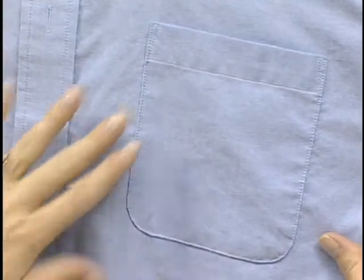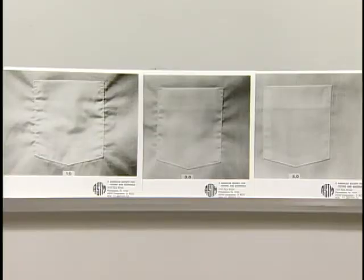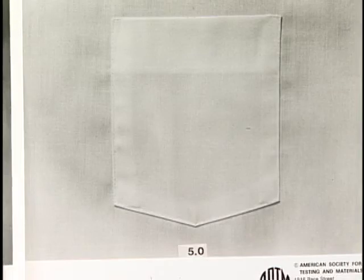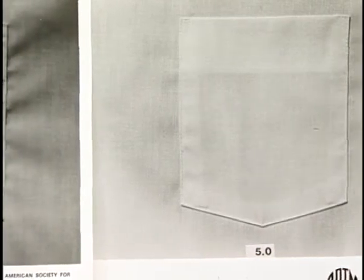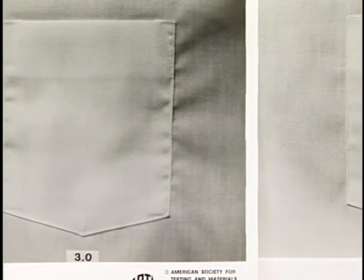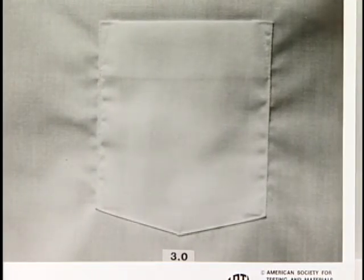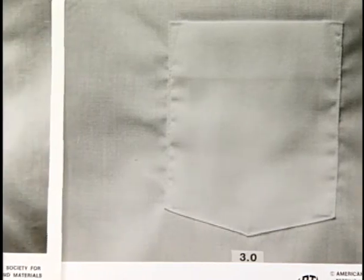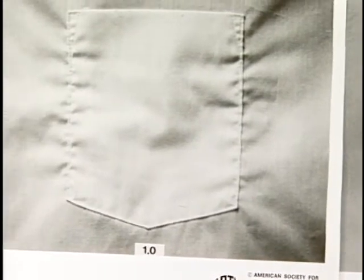The poor appearance of a pocket can ruin the overall appearance of a shirt. Replicas are also used for the evaluation of the pocket, with the rating scale from 1 to 5, with 5 being excellent. A rating of 5.0 represents a pocket with a sewn edge that is perfectly flat with no puckering, and the pocket fabric has a well-pressed appearance with no mussiness. A rating of 3.0 has some puckering of the sewn edges and mussiness of the pocket fabric. A rating of 1.0 shows severe puckering of the sewn edge which affects the surrounding fabric of the shirt and the pocket.